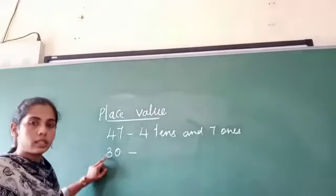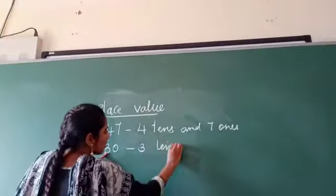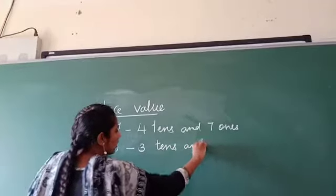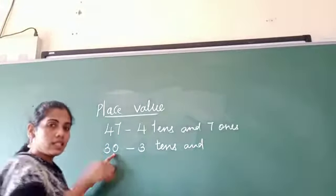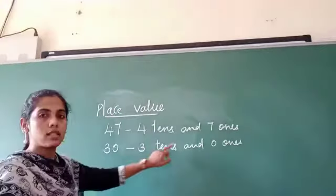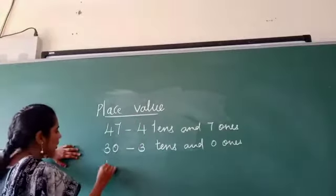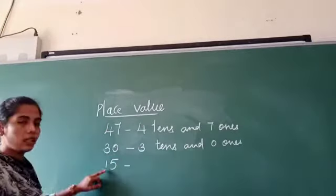Okay. Three. Three tens and how many ones? Zero ones. No ones. Zero ones. Three tens and zero ones. Like fifteen. In this fifteen.